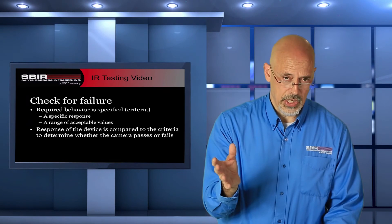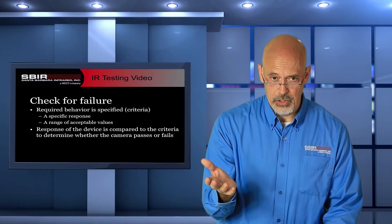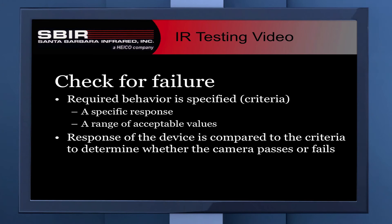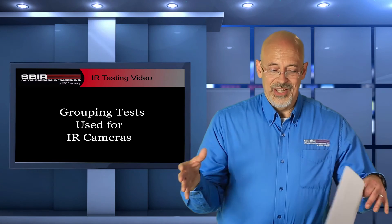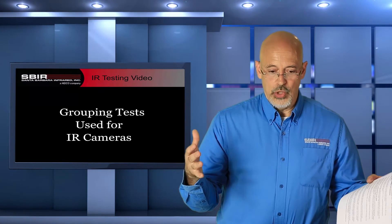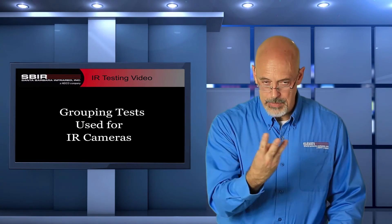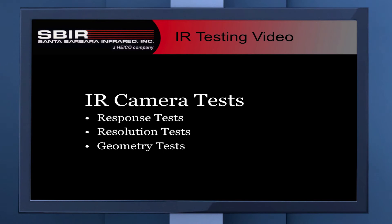The third reason you'd be doing testing on a camera is checking for failure. This is generally when you're out in the field — you have a camera that is going to be used in some critical operation, and you're trying to identify whether it functions properly before deploying or using it. Finally, tests are grouped into categories so you have a sense of what kind of equipment you're going to need. Infrared camera tests generally come in three different categories: response tests, resolution tests, and geometry tests.